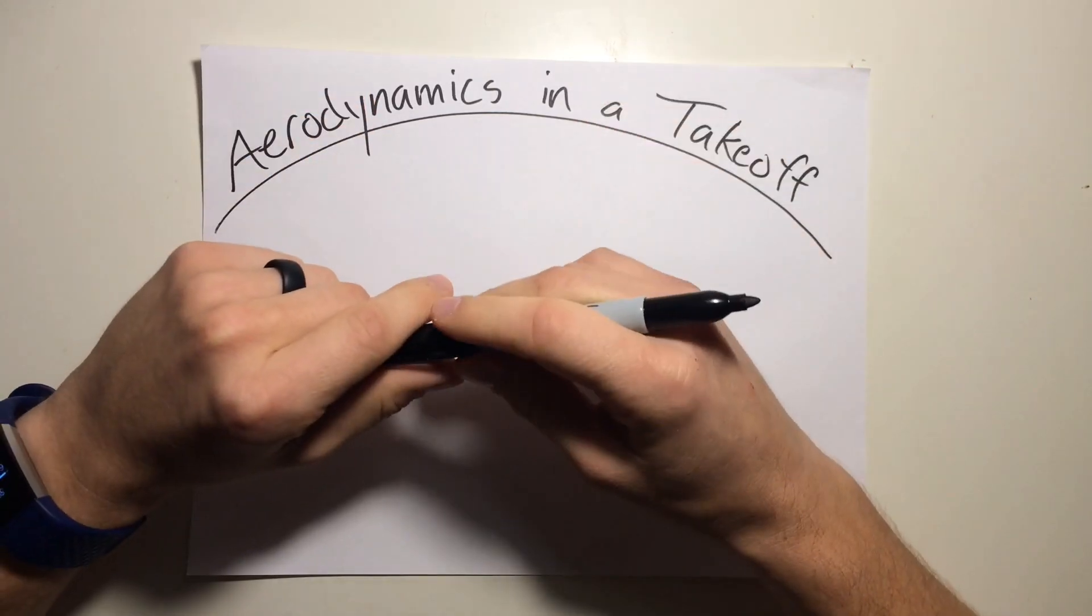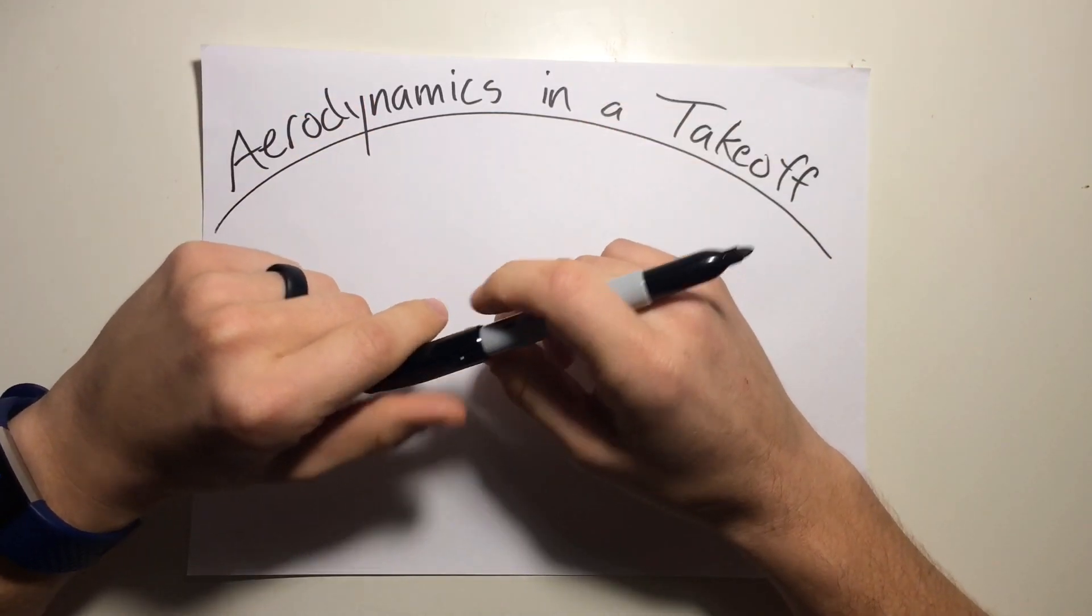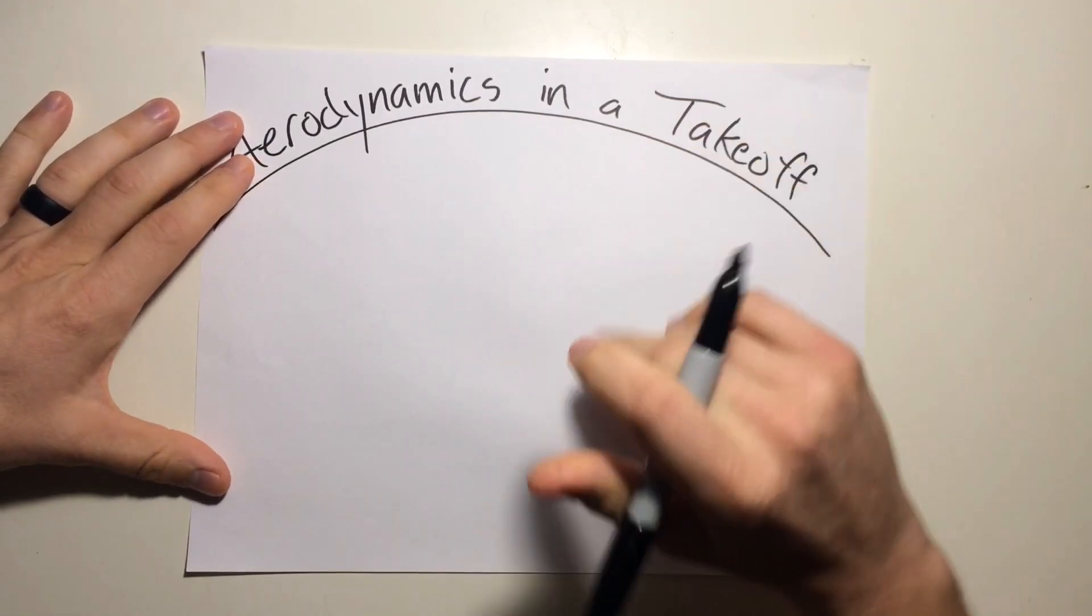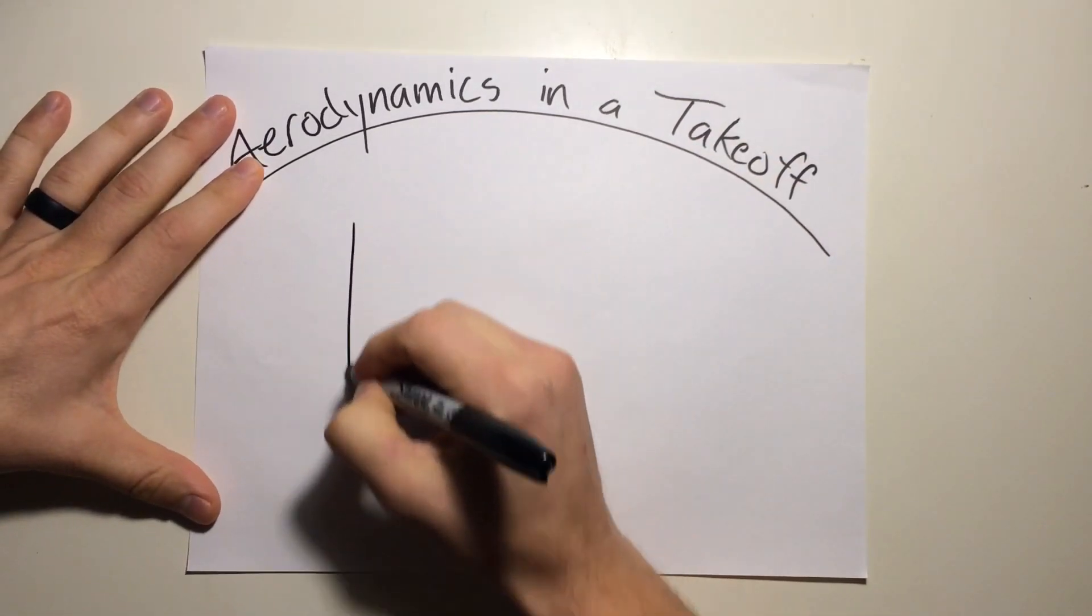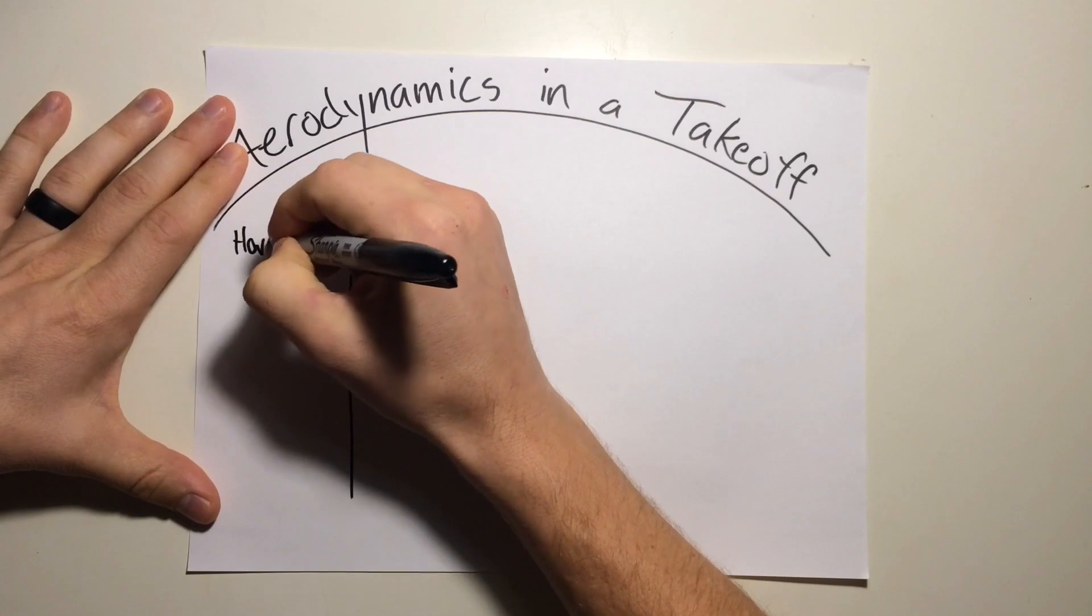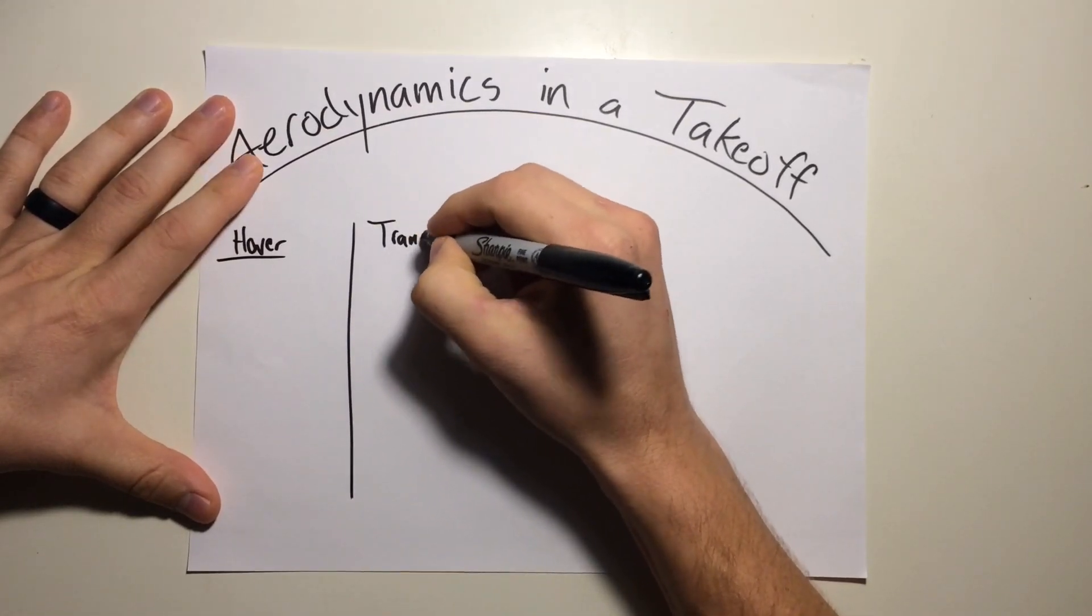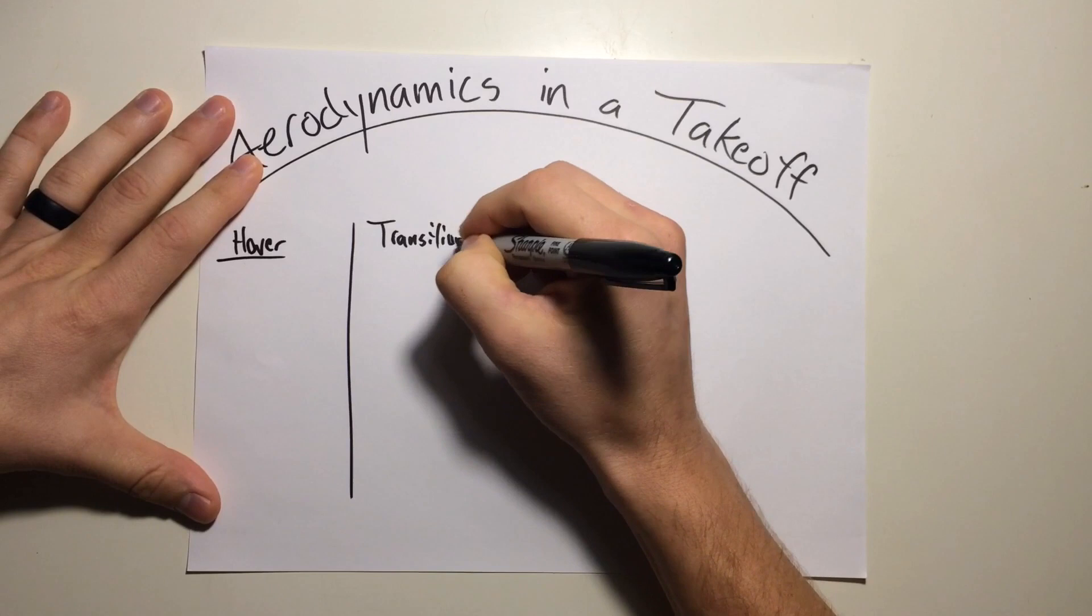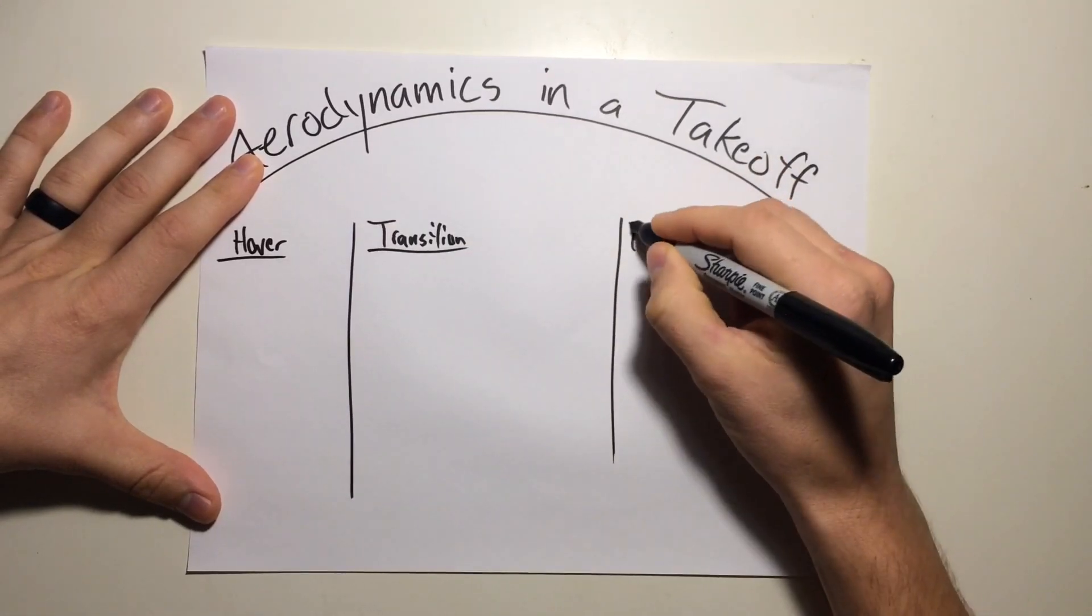In this video we're going to be talking about the aerodynamics of a takeoff. I've broken it down into three steps just for simplicity. So that first step is going to be the aircraft at a hover, then we're going to have the transition phase, and then we'll have forward flight.